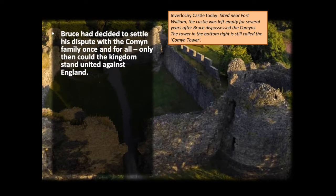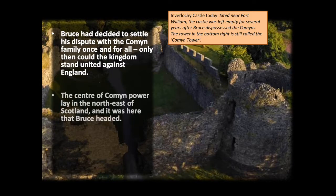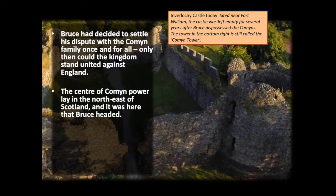Bruce had to deal with this family and remove it, and to do that he was going to have to take an army against them — all while the shadow of English attack hovered over him. The centre of Comyn power lay in the north-east of Scotland, and it was there that Bruce was headed. The north-east, Moray, had historically been a thorn in the side of the kings of Scotland for centuries by the time of Bruce.